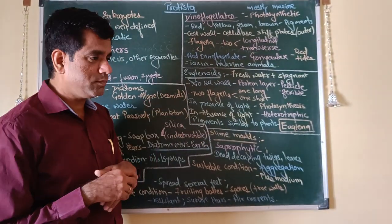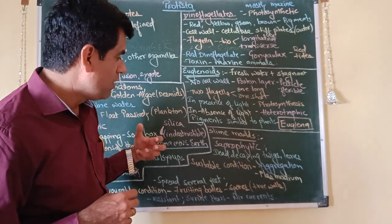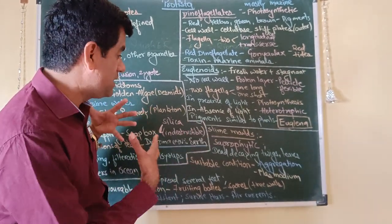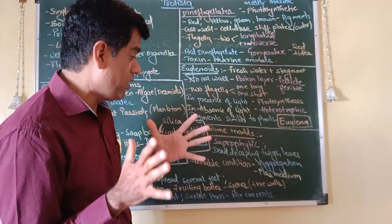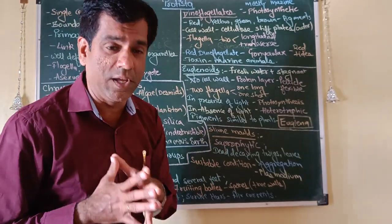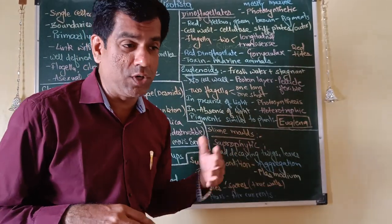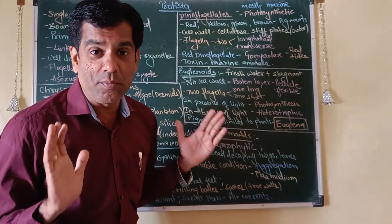We have slime molds, more fungi-like, which are saprophytic, which are growing on and spreading on dead decaying twigs and leaves. Whenever the conditions are suitable, under favorable conditions, they form an aggregation which is called plasmodium. Don't confuse this plasmodium with another plasmodium which you are going to meet in protozoa.